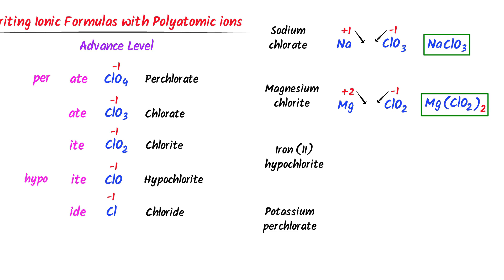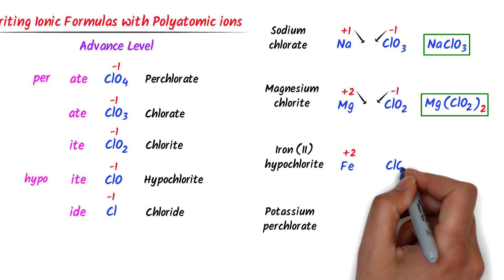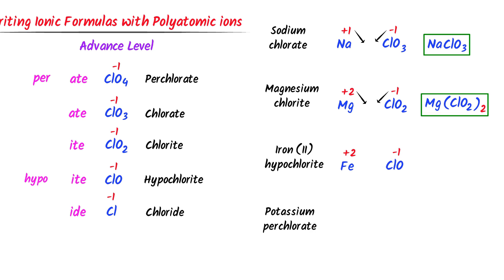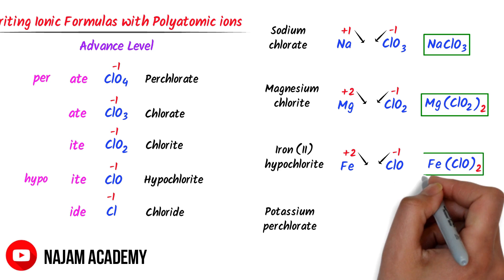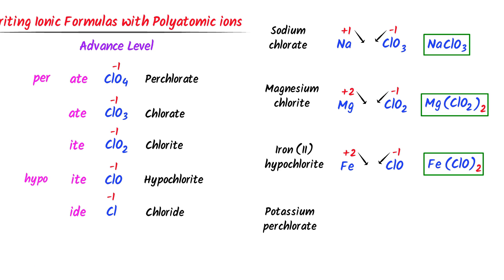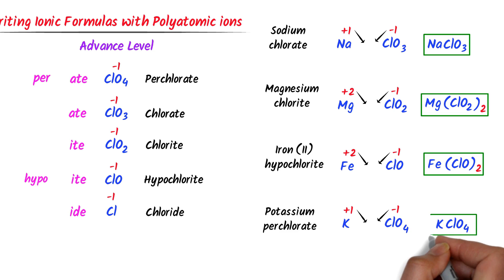In case of iron(2) hypochlorite, iron has oxidation state positive 2, and hypochlorite ClO carries negative 1 charge. I cross their respective charges and get Fe(ClO)₂ — iron(II) hypochlorite. In case of potassium perchlorate, potassium has oxidation state positive 1, and perchlorate ClO₄ carries negative 1 charge. I cross their charges and get KClO₄ — potassium perchlorate.